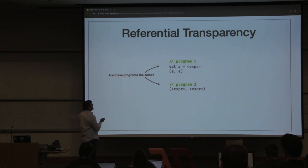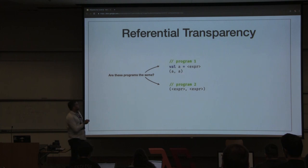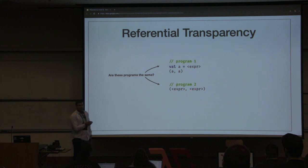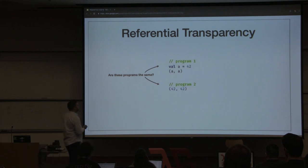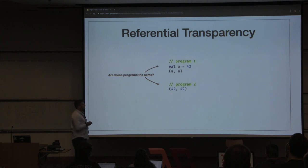So the question is: do we think these two programs are the same — a tuple of A, A and a tuple of an expression and expression? It depends. Are these two programs the same: A equals 42, tuple A, A versus tuple 42, 42. Do they have the same meaning? They do — I see a few heads nodding.